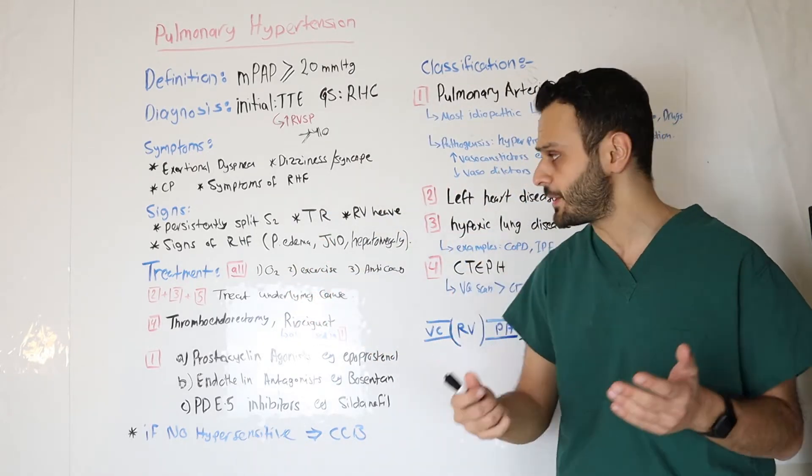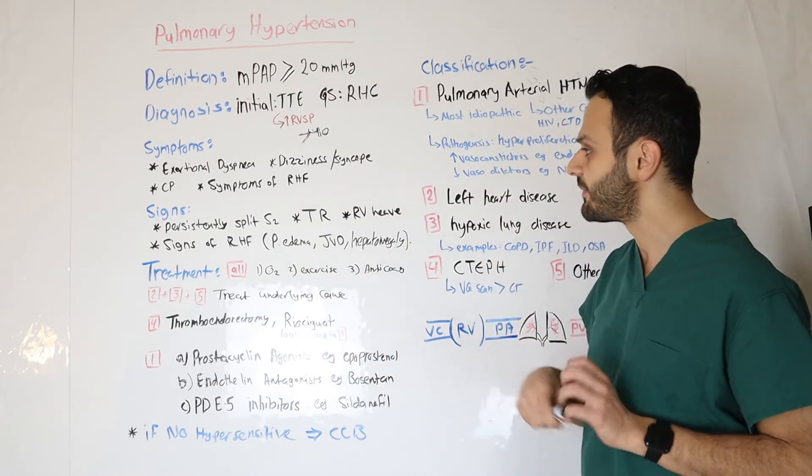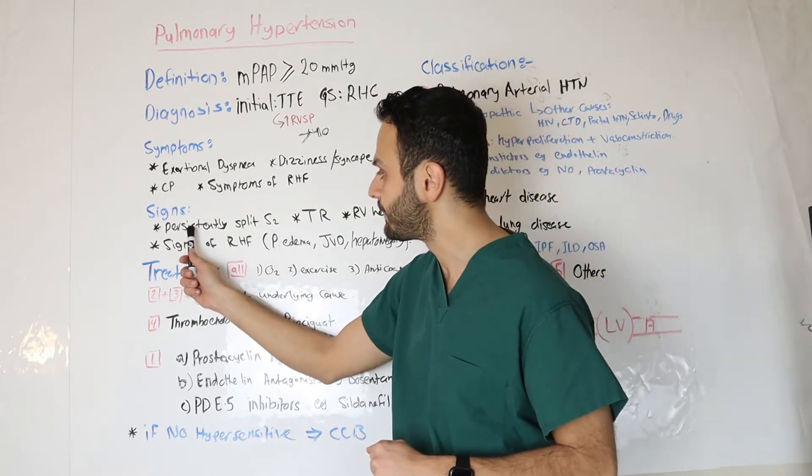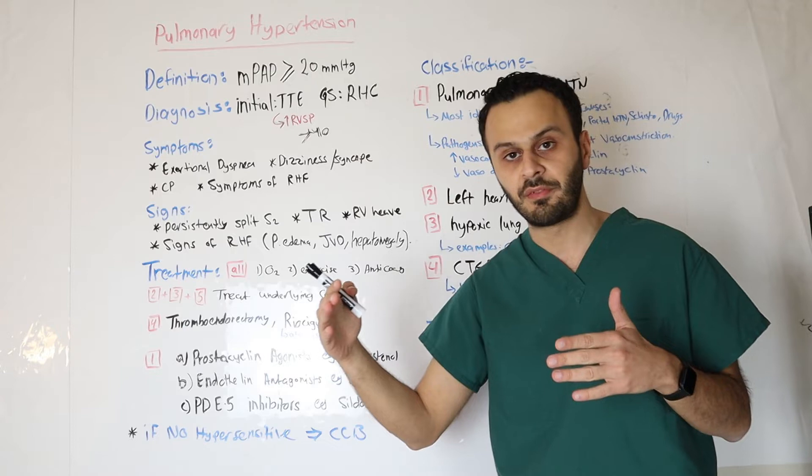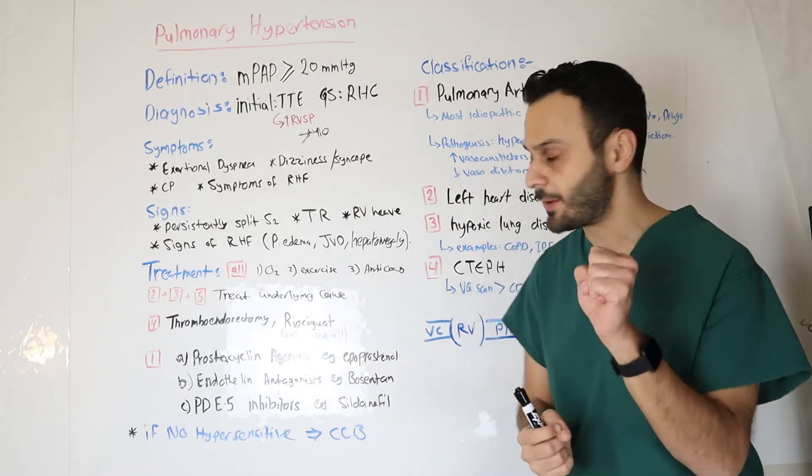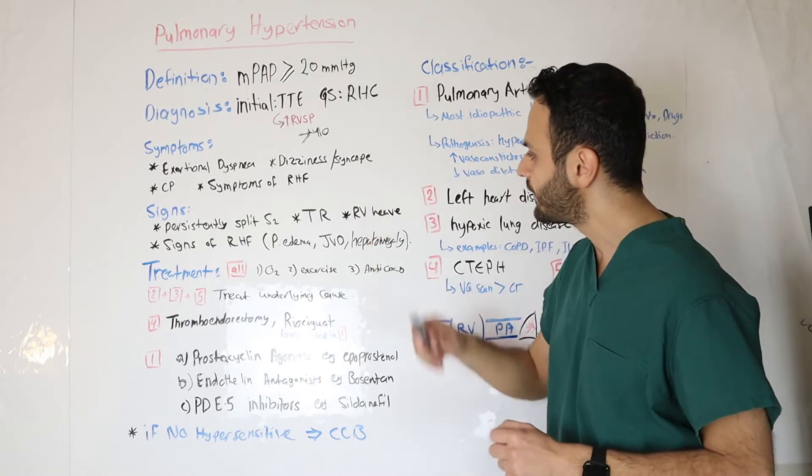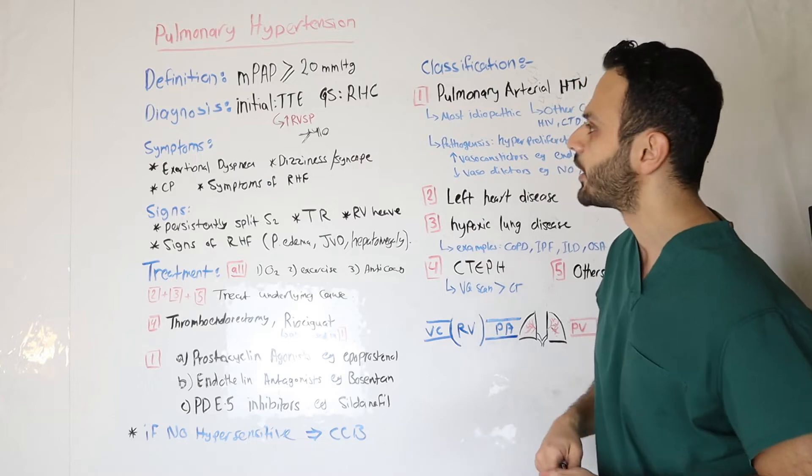And when you examine these patients, you'll see peripheral edema, you'll see JVD, you'll see some hepatic congestion. Also, when you examine these patients, you'll see persistently split S2. The reason is because your pulmonary valve will have such a delay in its closure due to the high pressure. You'll see tricuspid regurgitation, you'll see right ventricular heave, along with, of course, the signs of the right side heart failure.